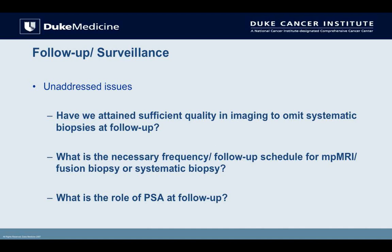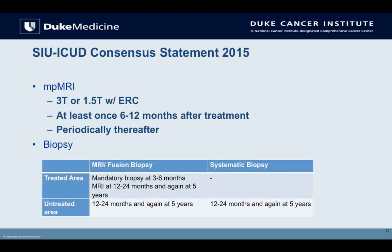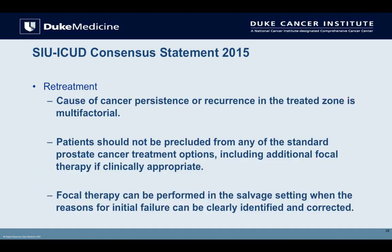Switching gears to follow-up, there are several unaddressed issues. Have we attained sufficient imaging quality to omit systematic biopsies at follow-up? I would say no. What is the necessary frequency and schedule for MRI, fusion biopsy, and systematic biopsy? What's the role of PSA? We've talked about definitions of failure in treated and untreated zones, and regarding markers, we have a long way to go — clinical trials are needed. PSA alone doesn't seem to be the magic bullet. Regarding re-treatment with focal therapy, the cause of cancer persistence or recurrence in the treated zone can be multifactorial. Before considering salvage with more focal therapy, you must identify the reasons for initial failure and correct them.